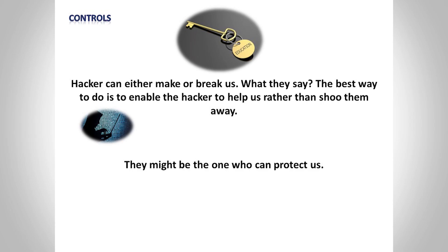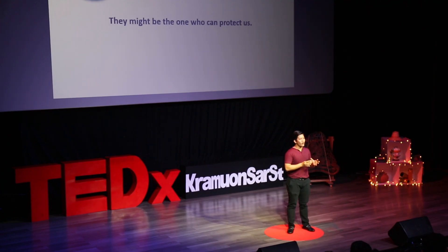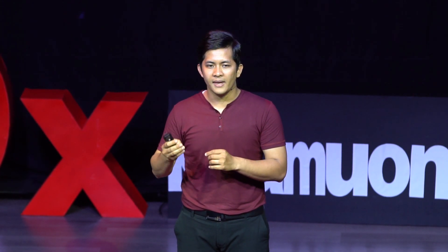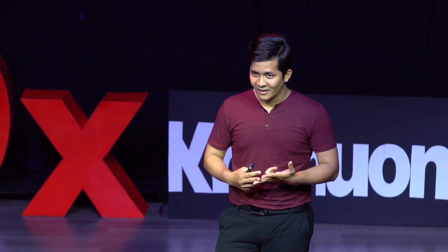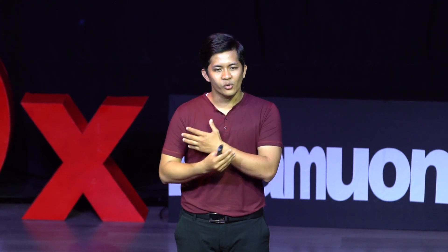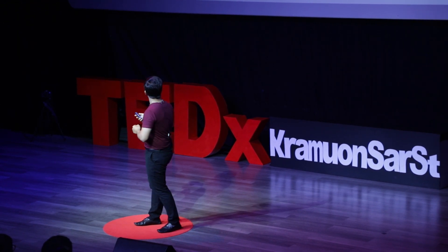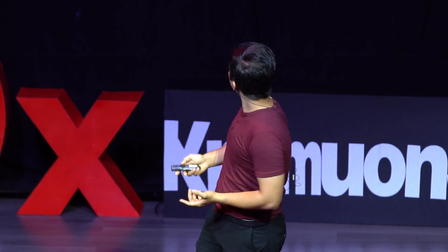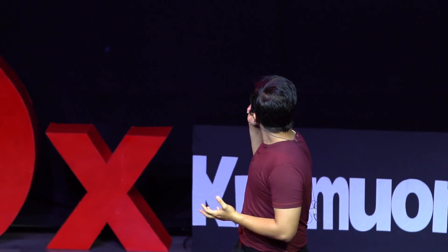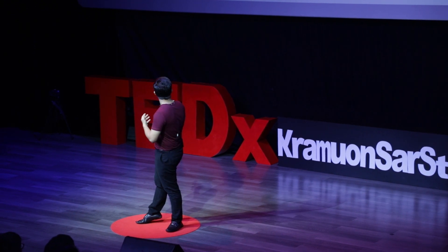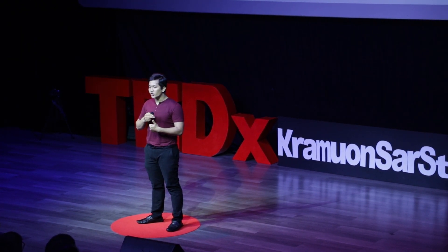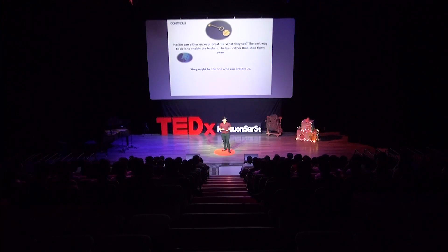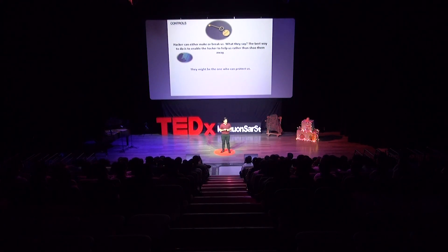What are the controls against social engineers? No matter what controls are implemented, there will always be the possibility of human factors being influenced by social, political, and cultural events. Human factors are still the weakest link, even if you implement many kinds of controls. Hackers can either make us or break us. The best way is to enable hackers to help us rather than shut them away, because a hacker might be the one who can protect us. A good education and training program will always undoubtedly pay for itself, because it provides users with guidelines and checklists to help them recognize social attacks.